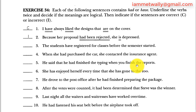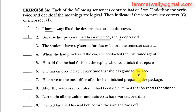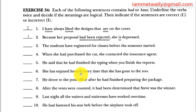Sentence six: 'She has enjoyed herself every time that she has gone to the zoo.' 'Has enjoyed' is present perfect and 'has gone' is also present perfect. Both verbs are in the same tense — present perfect and present perfect — which can be acceptable because they match. Sentence six is correct.